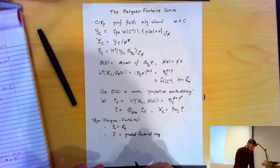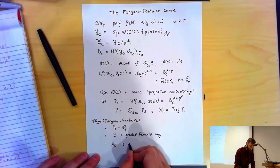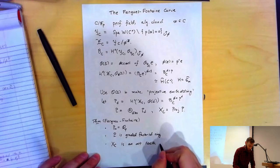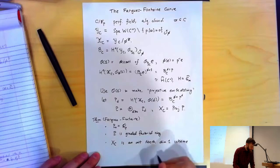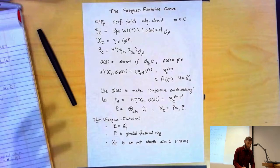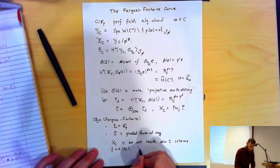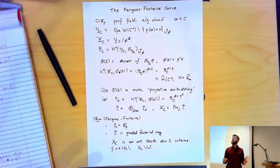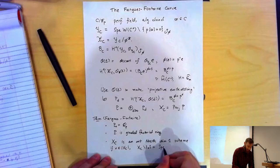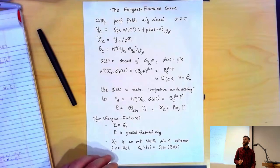Let me sum up what X_C is. X_C is an integral Noetherian scheme of dimension 1. It's not affine, but if I remove a single closed point, it is. The set of closed points: X_C is dimension 1, so there's a single generic point and every other point is closed. If I remove one of these points, I get the spectrum of a ring, and remarkably that ring is a PID.